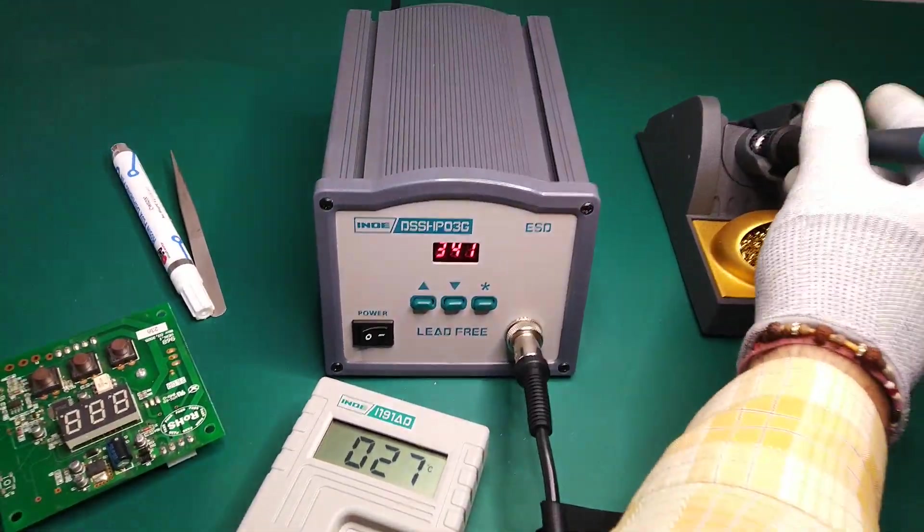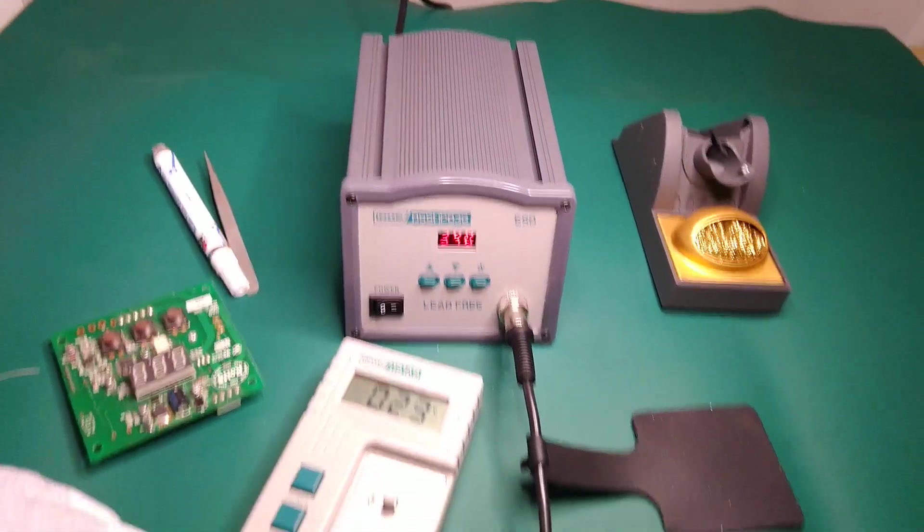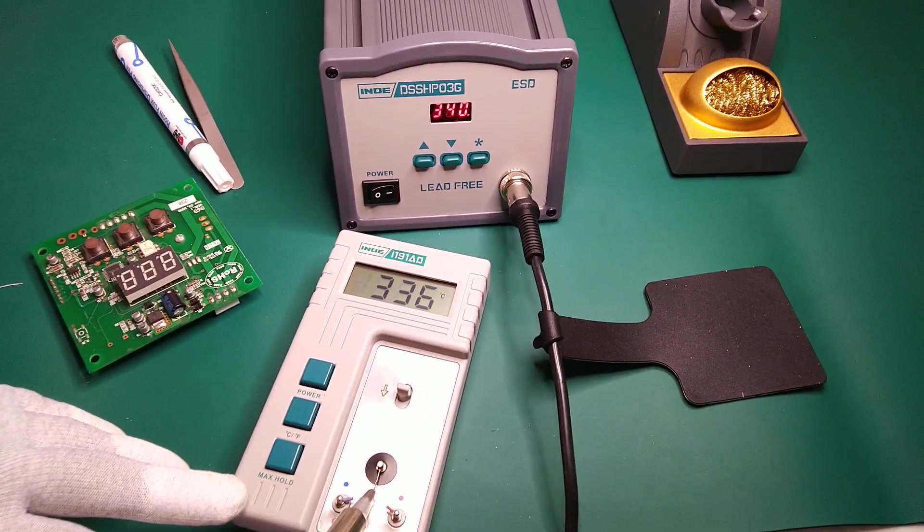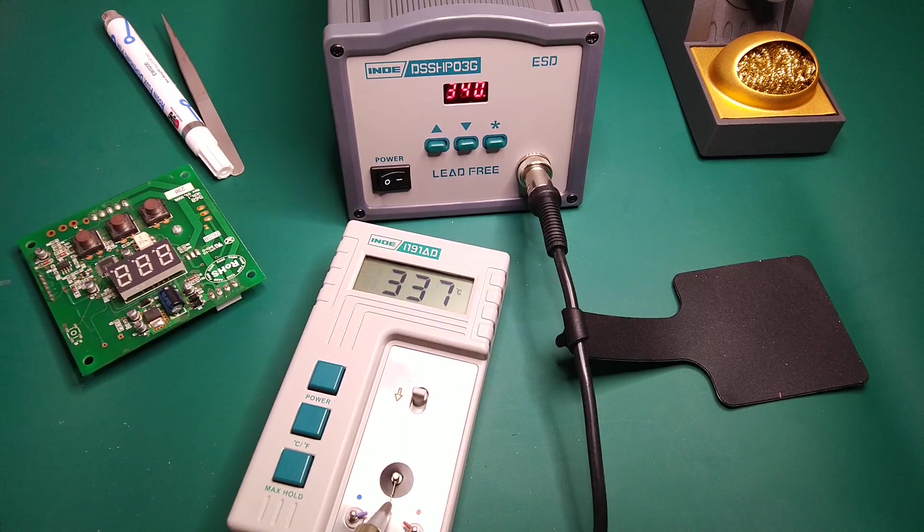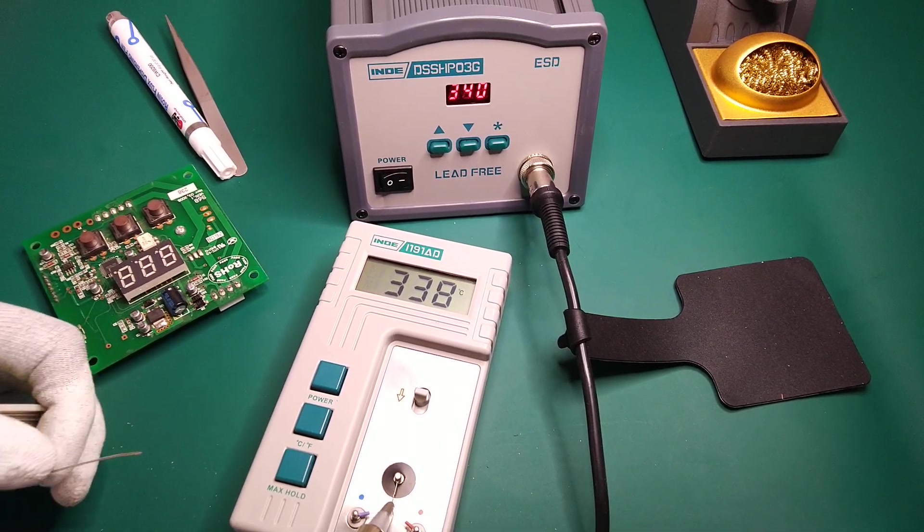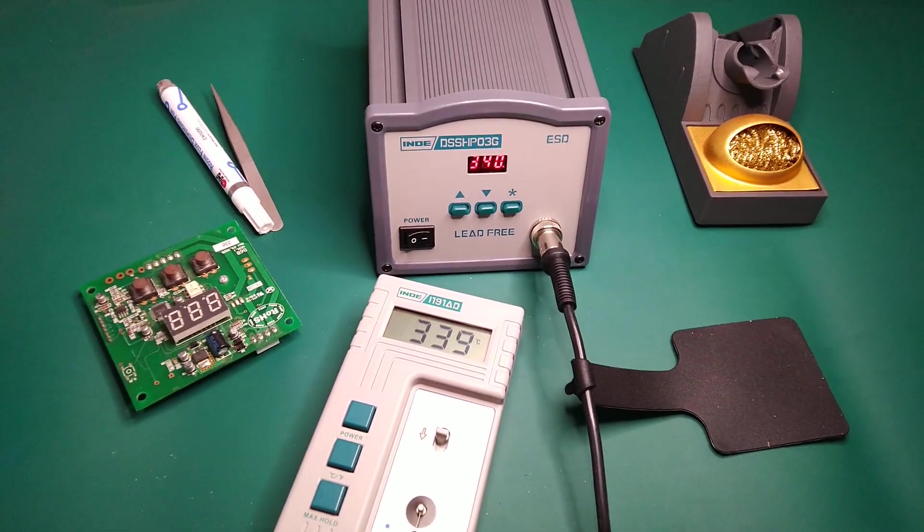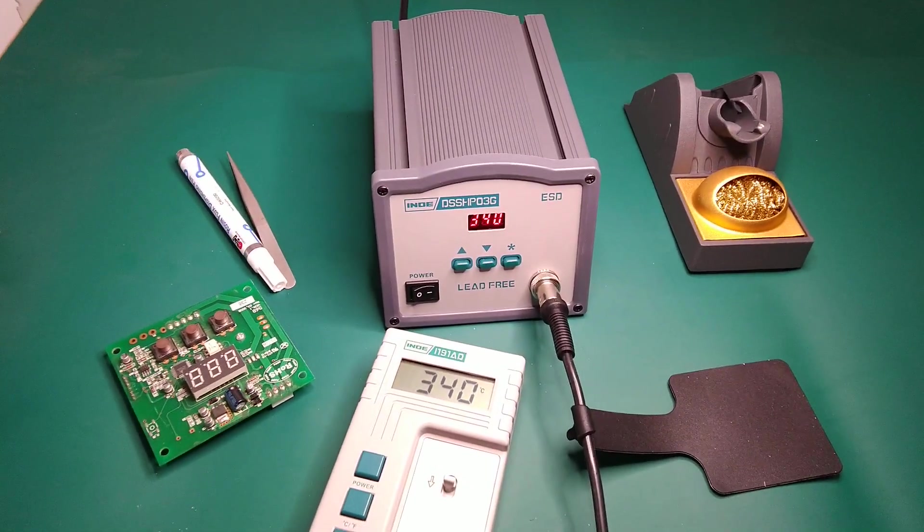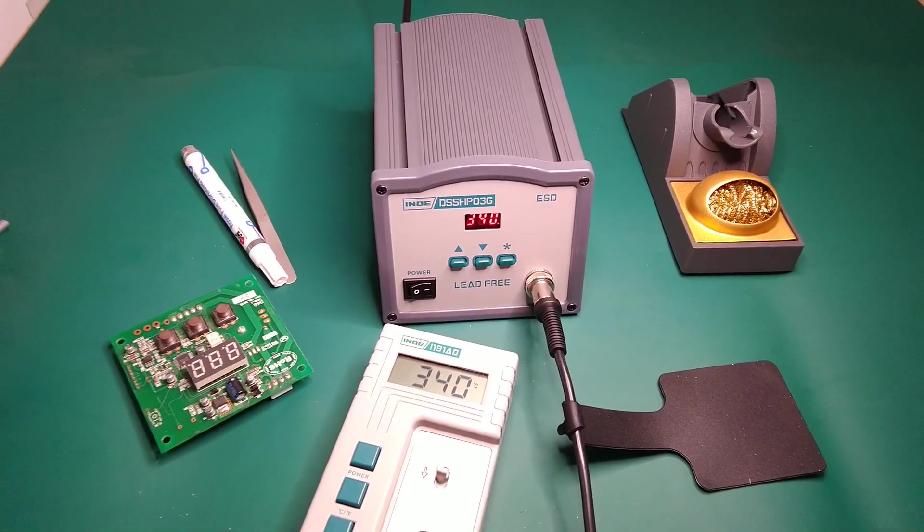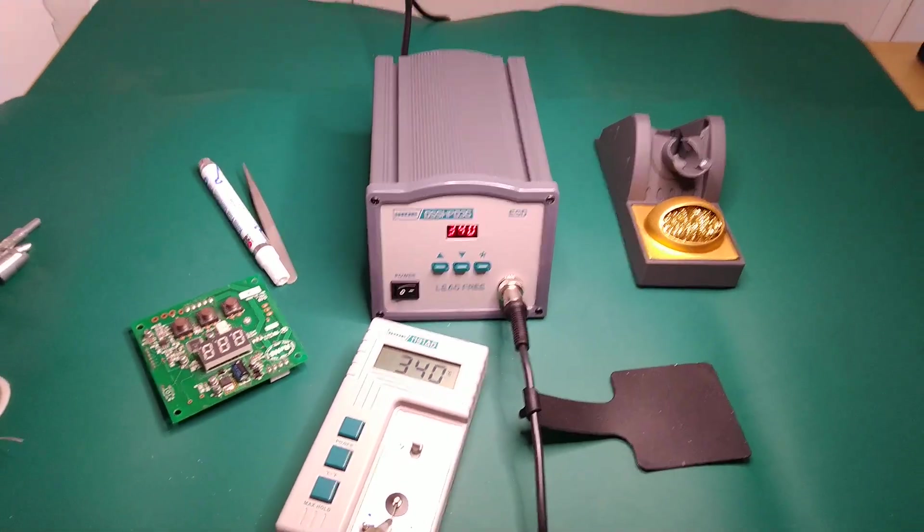Now we will verify whether the offset given to the unit is there or not. Okay, so we can see that this unit has been calibrated and the set temperature and the actual temperature match.